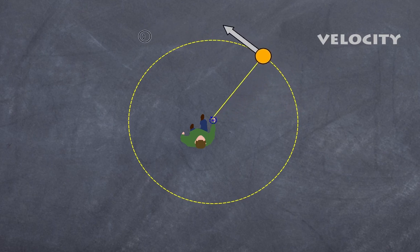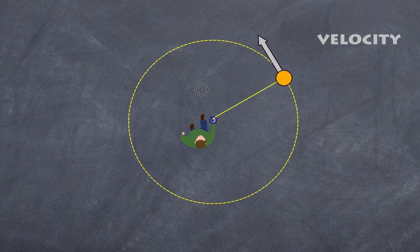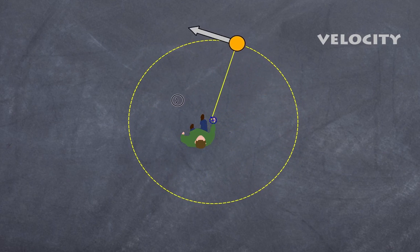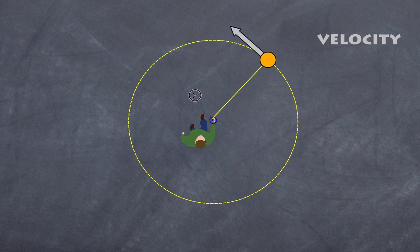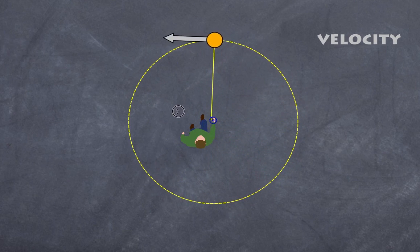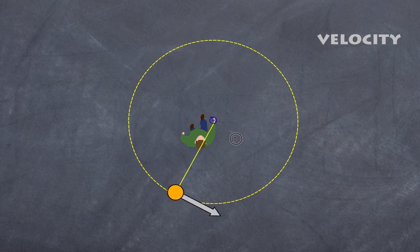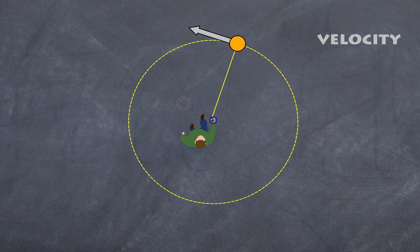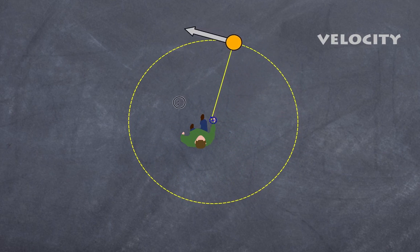As the ball continues to turn, the velocity also changes, because velocity is a vector quantity — it has both a size and a direction. In this example, the ball moves at a constant rate, so the size of the velocity is constant. However, because the direction is constantly changing, the velocity is constantly changing as well. If velocity is changing with respect to time, we say the object is accelerating.